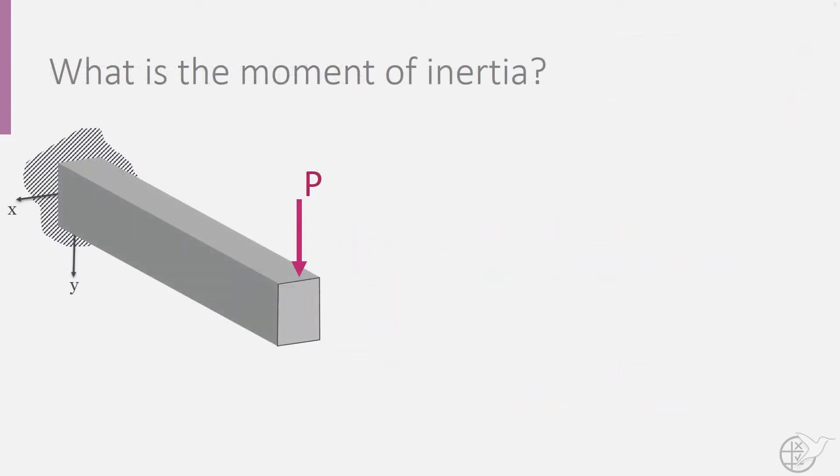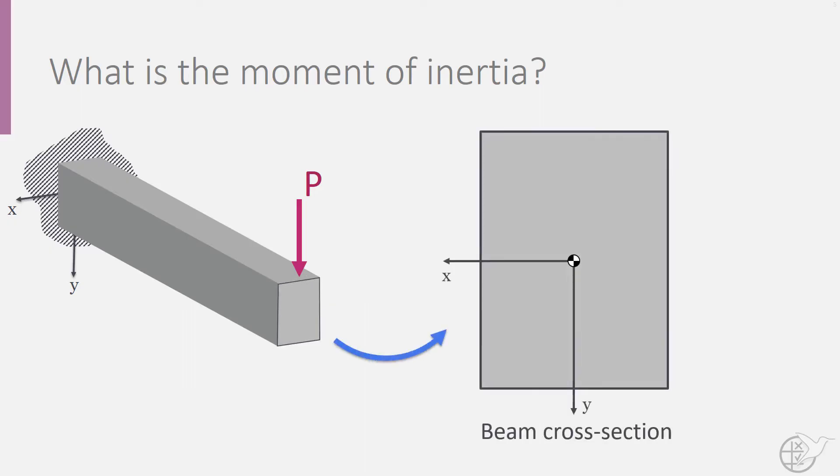The moment of inertia is a geometrical property of a beam cross-section that quantifies the distribution of the material around the axis of bending moment passing through the centroid of the cross-section, also known as the neutral axis.